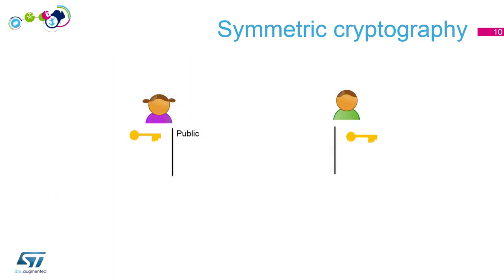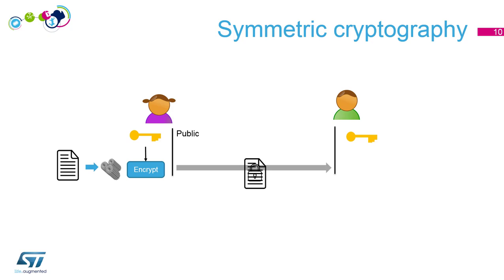To recap: Alice writes her letter, uses a key to encrypt the message, and sends the encrypted message to Bob. Bob has exactly the same key as Alice, so he can decrypt the message and get access to the clear content. Let's do a short hands-on to fix ideas.